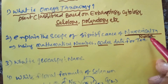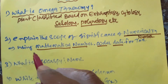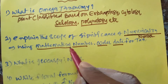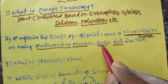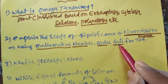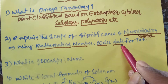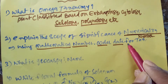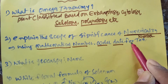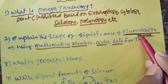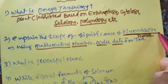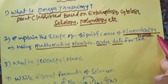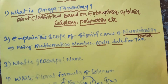Numerical classification means using different mathematical numbers, codes, and data for classification. That classification is called as numerical taxonomy or number taxonomy.